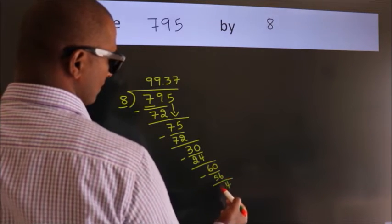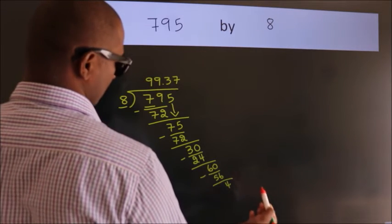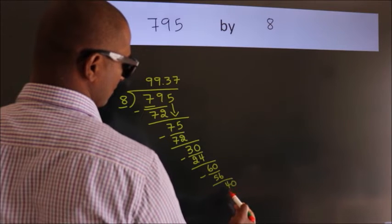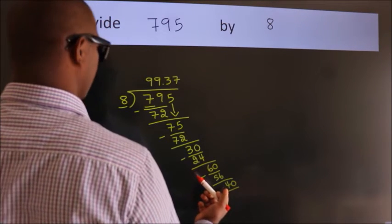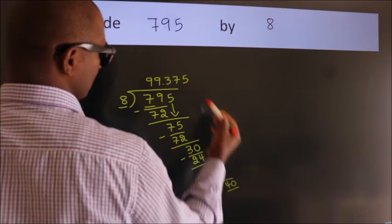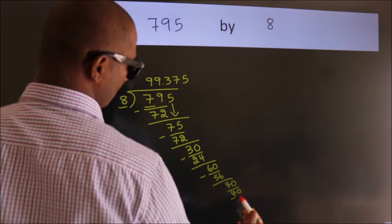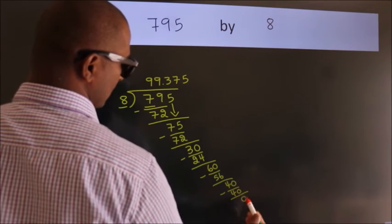After this, we get 40. When do we get 40? In 8 table, 8 fives, 40. Now we subtract. We get 0.